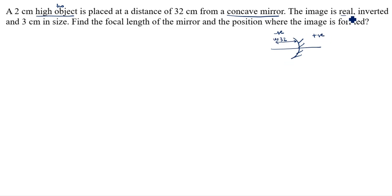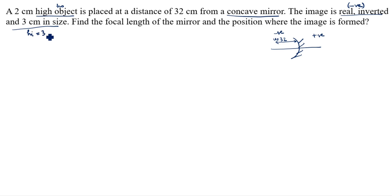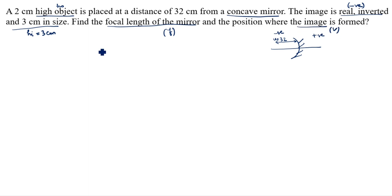The image is real, inverted, and 3 centimeter in size. Real and inverted means always negative. So height of the image is 3 centimeter. We need to find F, the focal length, and the position where the image is formed, that is V.